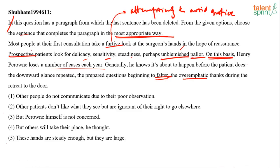Now let's discuss the words. What is the meaning of 'prospective'? Someone who can predict or see the future — expecting something specific in the future. So prospective patients are patients who try to predict whether the operation will go well or not. Generally, people say that doctors have very steady hands, so patients look at the doctor's hand to see if it is steady, less sensitive, and very stern.